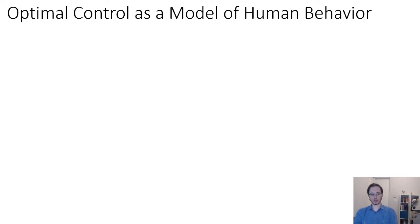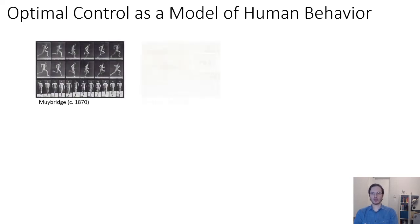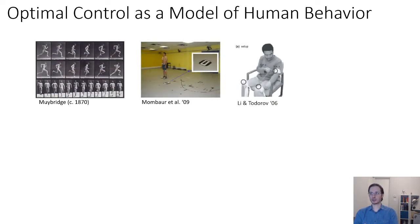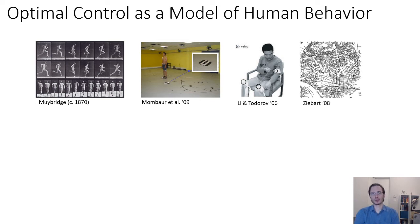One of the things I mentioned in the previous lecture is that optimal control and reinforcement learning could serve as a model of human behavior. There's actually a very long history going back over a hundred years of scientists trying to study human motion, human decision making, and human behavior through the lens of optimal decision making and rationality.